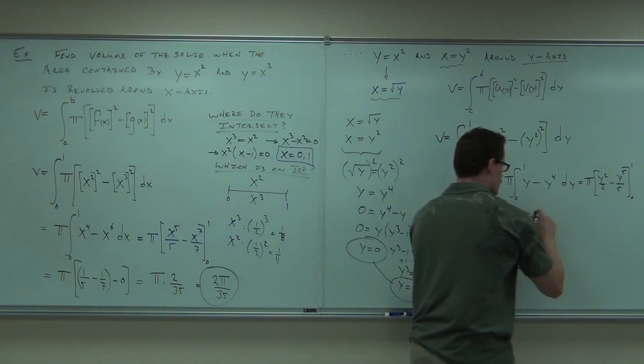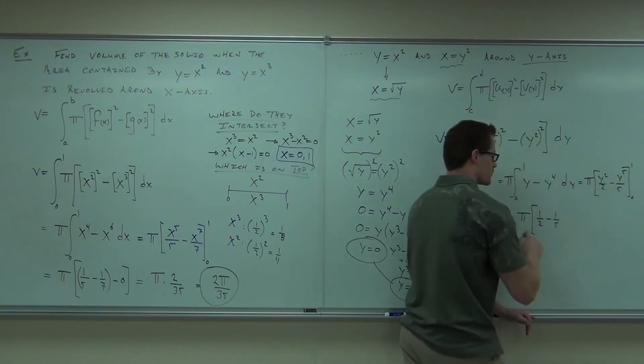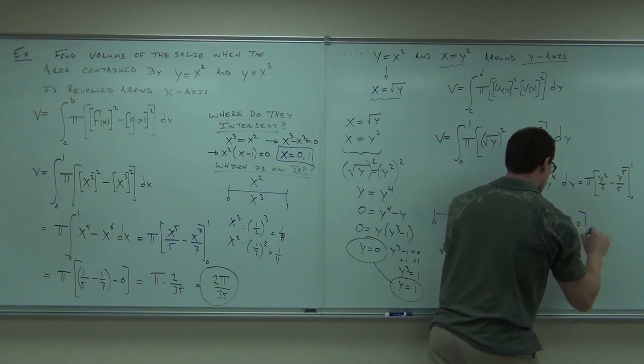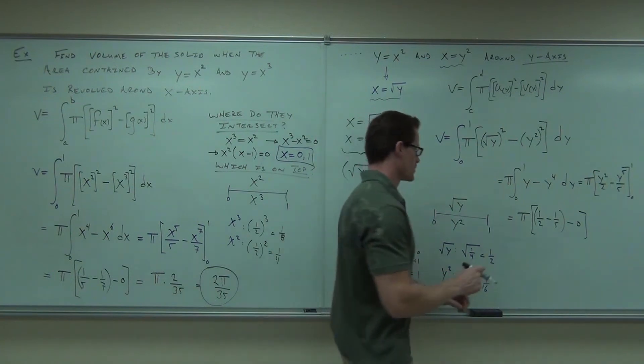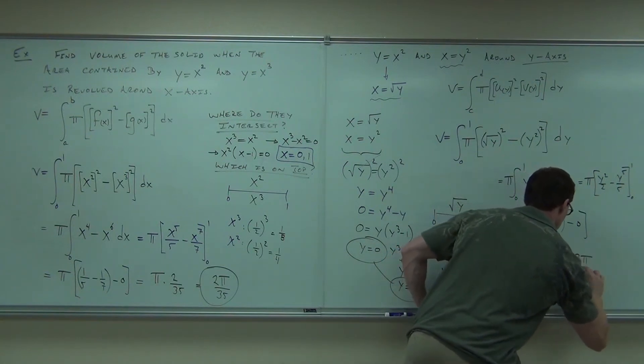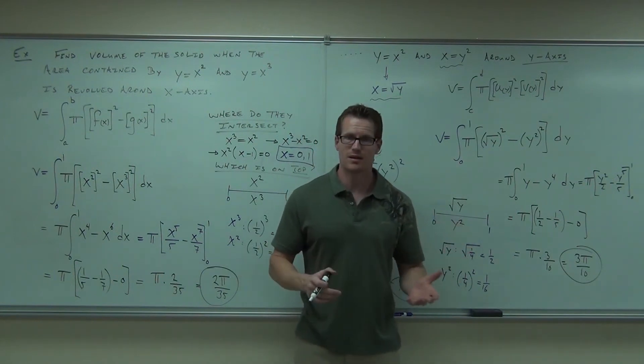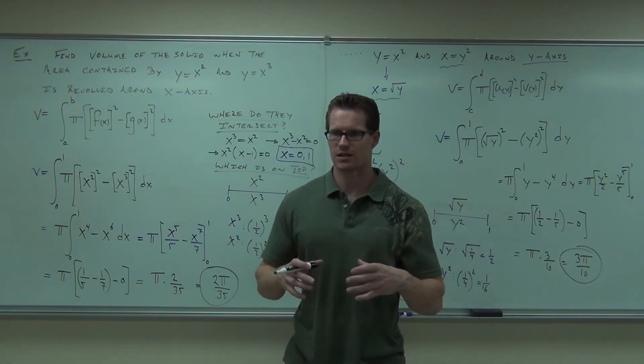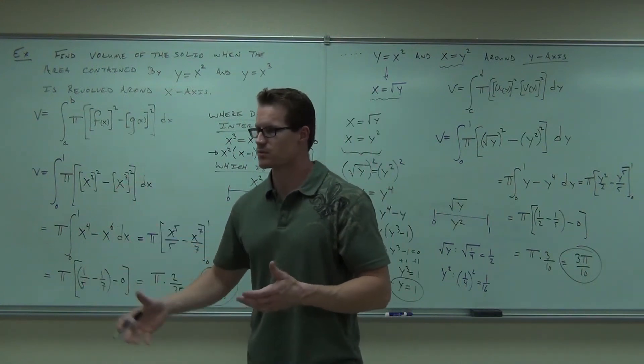And we're evaluating from zero to one. Let's plug in the one first. That's what it says to do. So we're going to do one squared over two. That's just one-half. Minus one to the fifth over five. That's just one-fifth. I'll check the zero, but I know I'm getting zero minus zero. That's still zero. One-half minus one-fifth should be three-tenths. Not too bad. Not too bad. As long as you understand the idea here that find out where they actually intersect. Set up the integral appropriately. Make sure you find out which one comes first and which one comes second. And then it's all about the formula. We're just plugging it in.